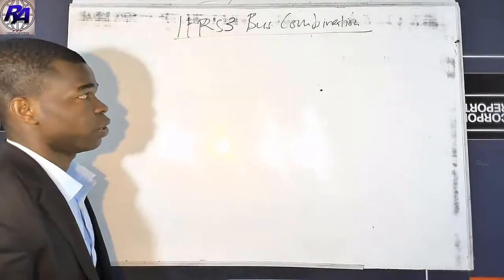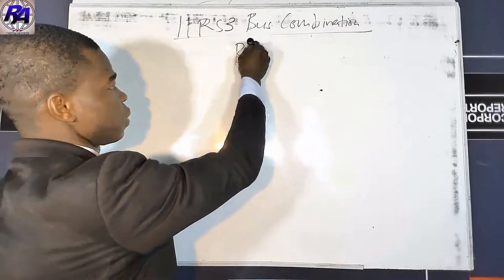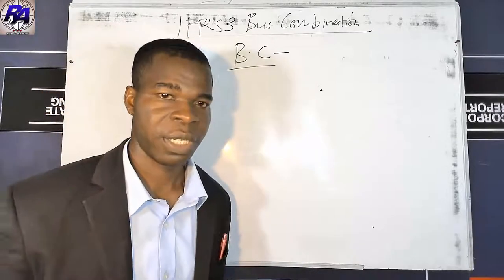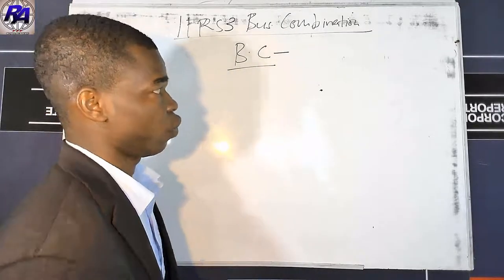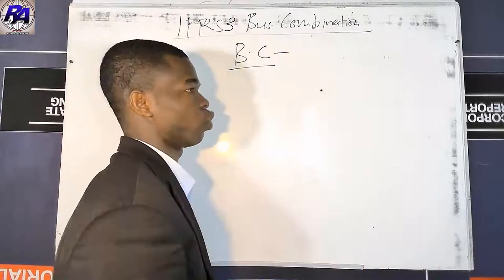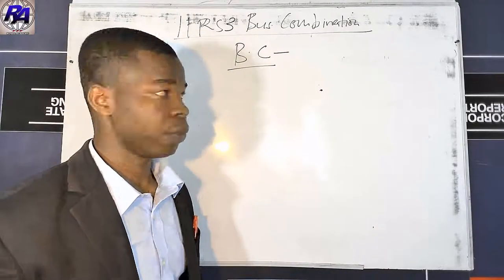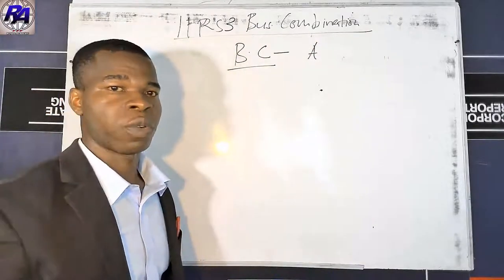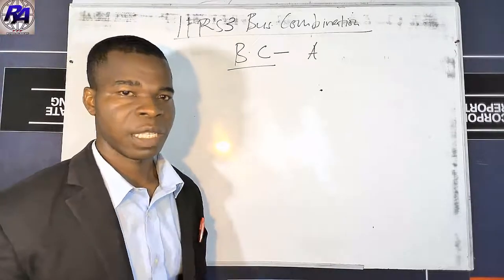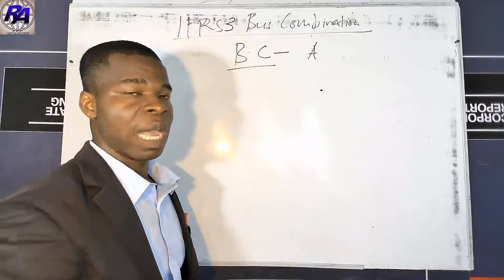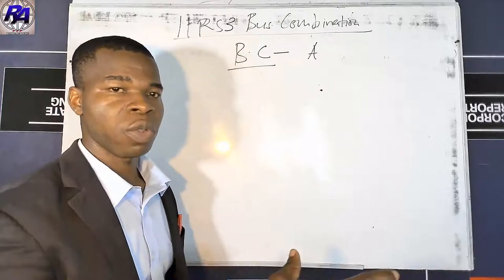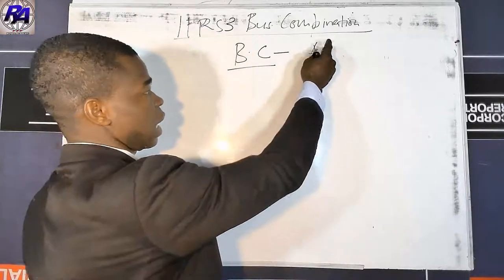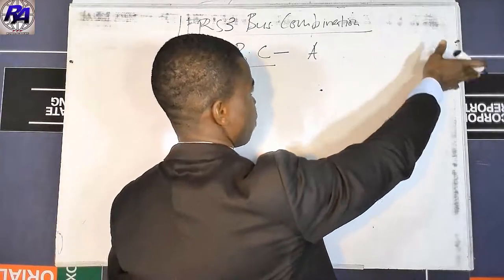Before going deeper, what is a business combination? A business combination is a transaction or event that gives rise to an acquirer obtaining control over one or more businesses. The acquirer is the entity acquiring another entity or obtaining control over another entity.